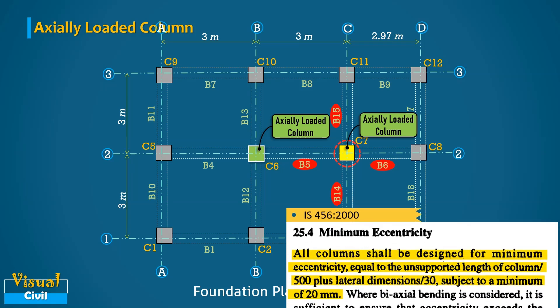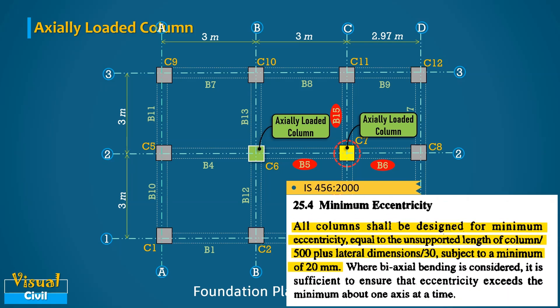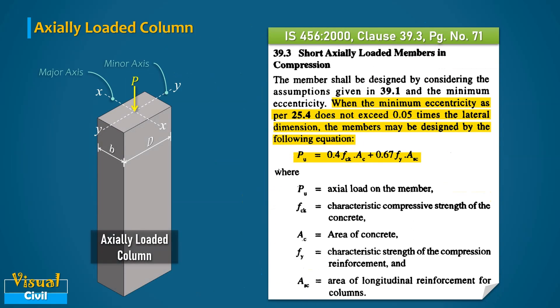The clause 25.4 of IS code ensures that the design of such columns is sufficiently conservative to enable them to be capable of resisting nominal eccentricities in loading. IS 456-2000 gives the design methodology for this type of column. The clause 39.3 suggests the equation to design the column when the minimum eccentricity as per clause 25.4 does not exceed 0.05 times the lateral dimension.